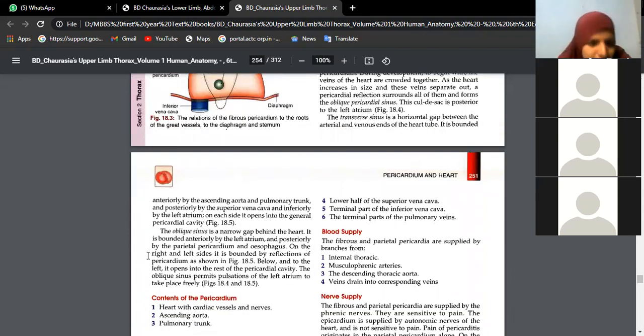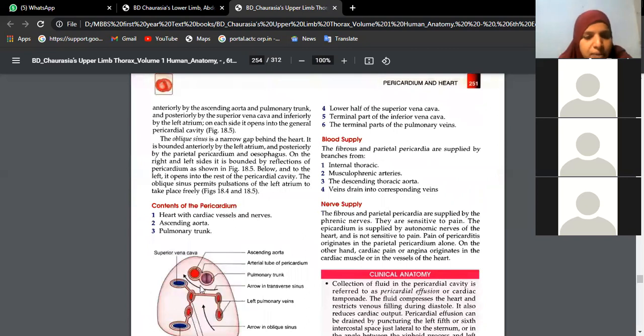See here, oblique sinus is the narrow gap behind the heart. Anteriorly it is bounded by left atrium and posteriorly by parietal pericardium and esophagus. On the right and left side it is bounded by reflections of pericardium, as is shown here. These are the reflections of pericardium.